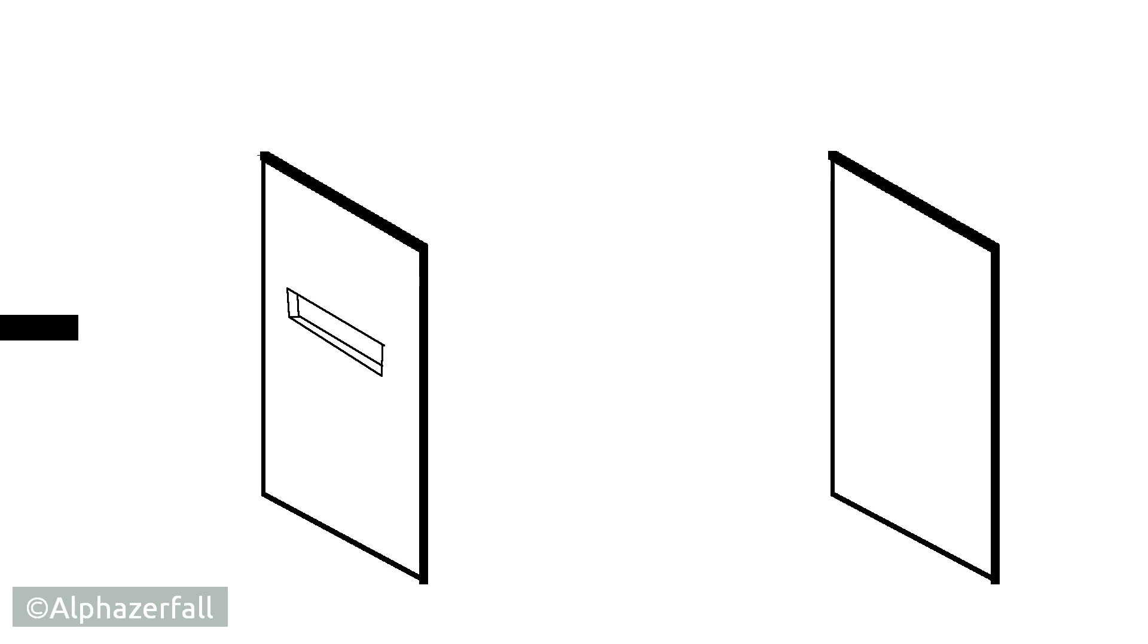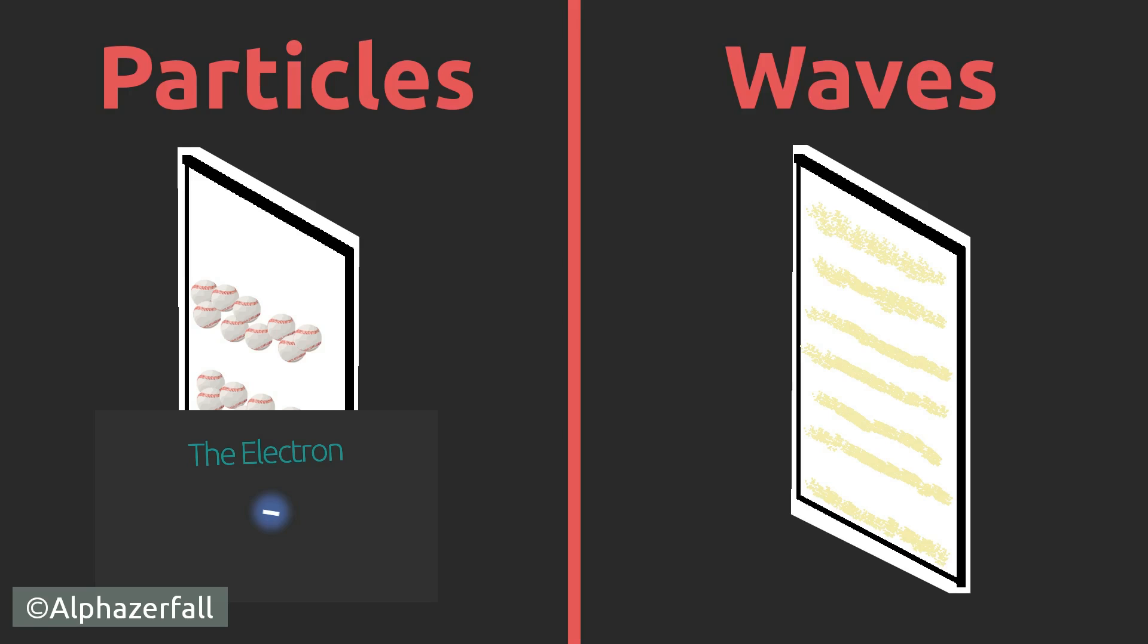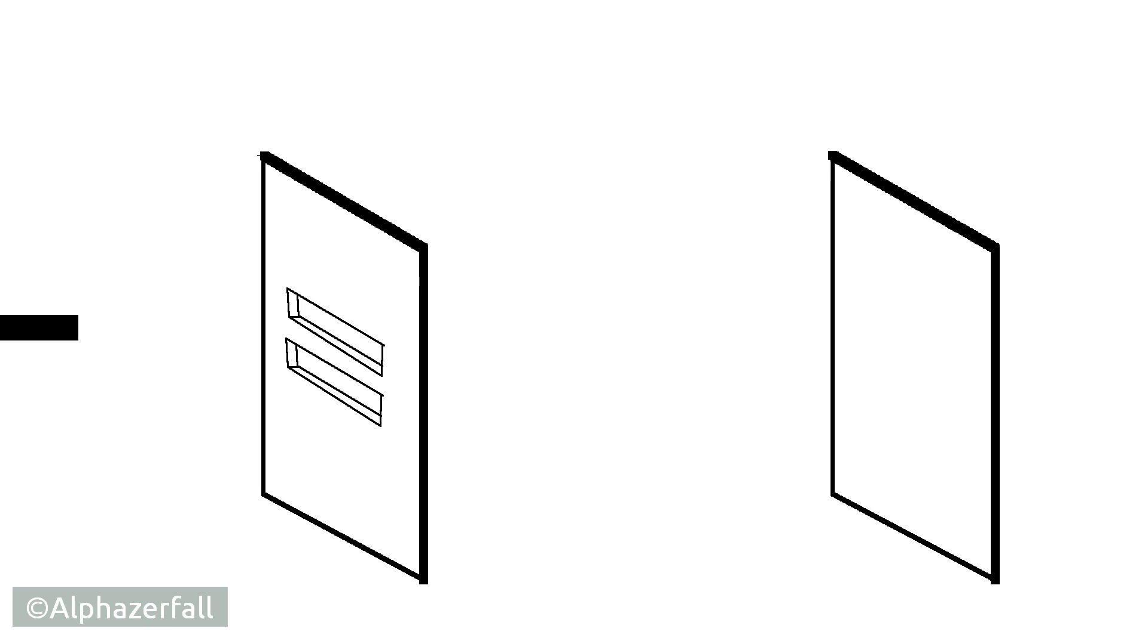If we shoot them through a wall with one gap we receive a pattern which is similar to the pattern of baseballs which were shot through the wall with one gap. That would support the definition of electrons.